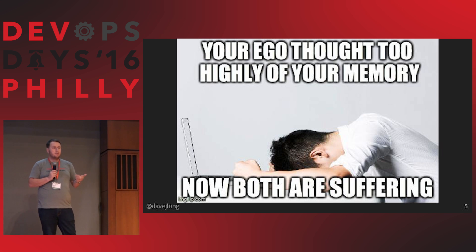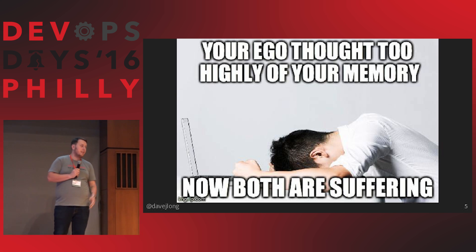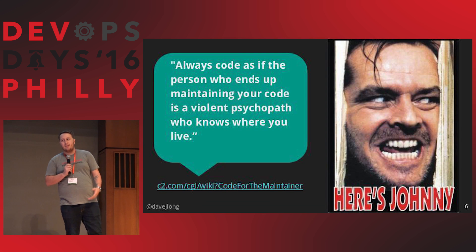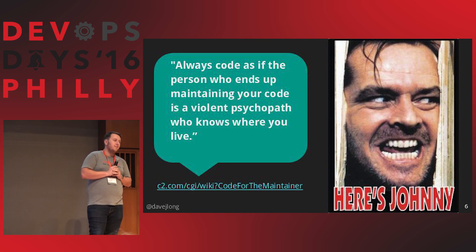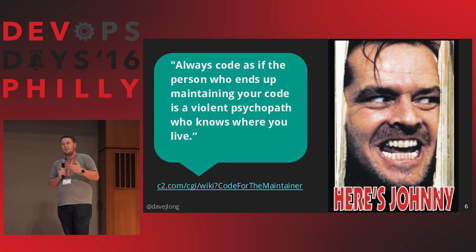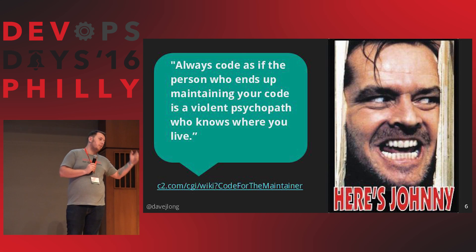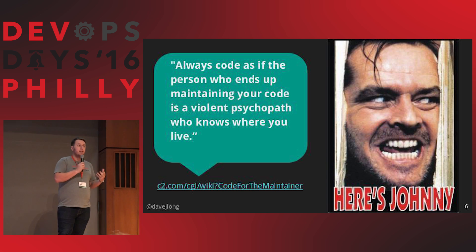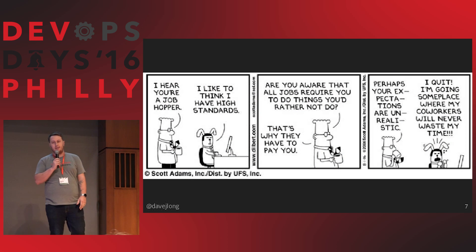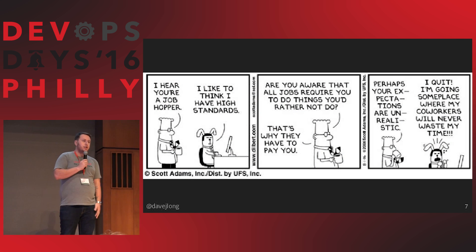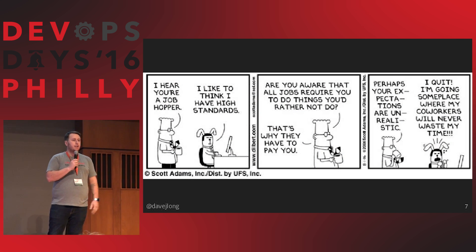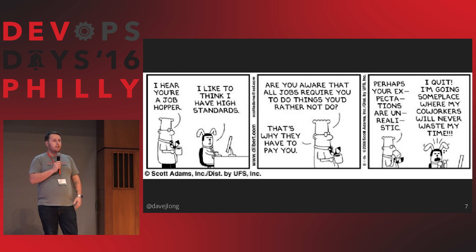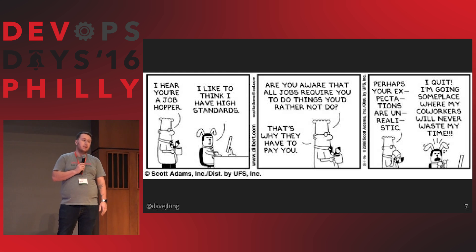We can't figure out what it's doing now because how can you know without expectations? So we have to treat our code as if there's going to be a psychopath who's going to maintain it for us. And even if you say that you're always gonna be the maintainer, chances are you're not. Because Americans, on average, change jobs every four years according to a MarketWatch survey. Technology is even faster than that — people who have a two-year tenure or a one-year tenure in companies.